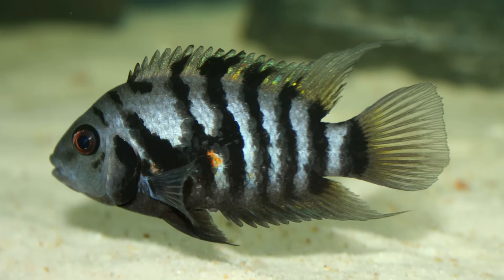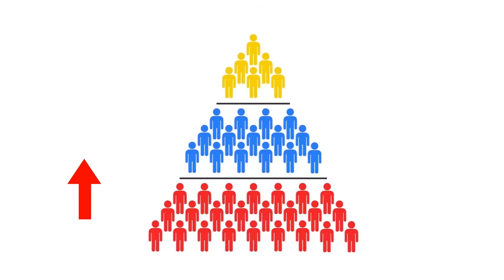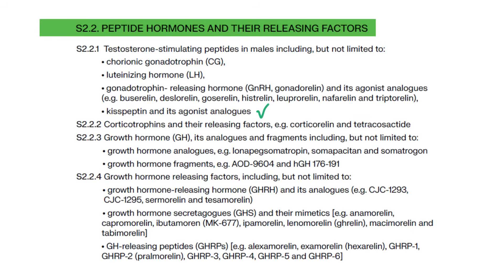Interestingly, animals that become more dominant in their social hierarchy develop higher levels of GnRH. So increasing social status and dominance could be a way to increase GnRH and downstream LH and testosterone — things like competition, getting promoted in your career into positions of more influence and power are probably going to beneficially impact your GnRH.